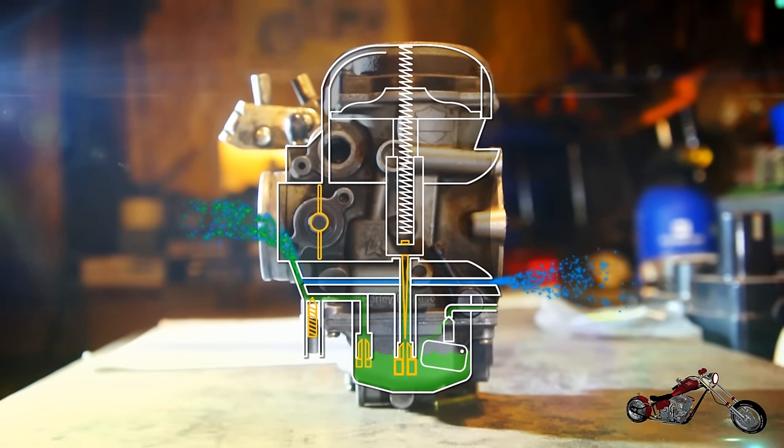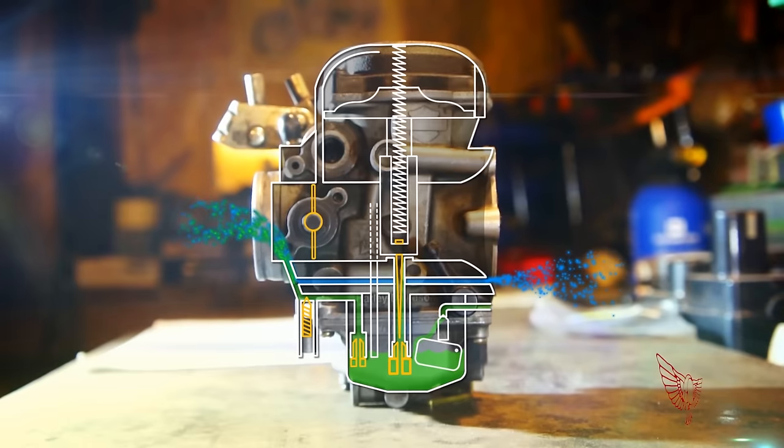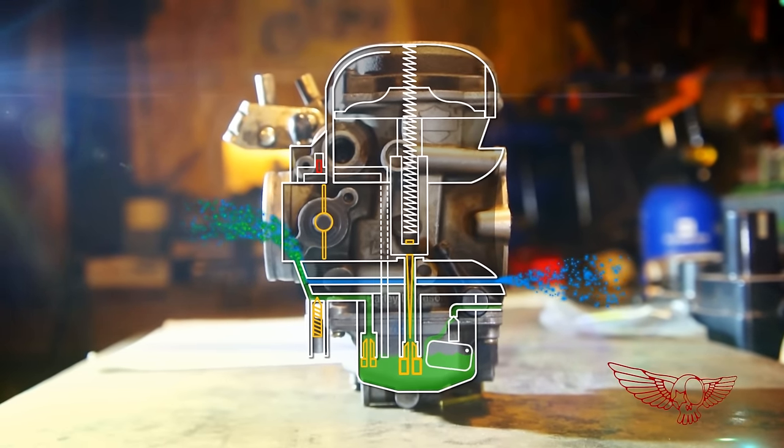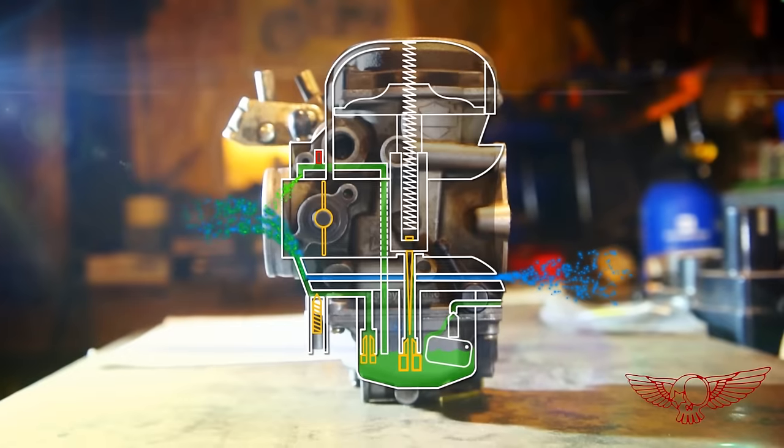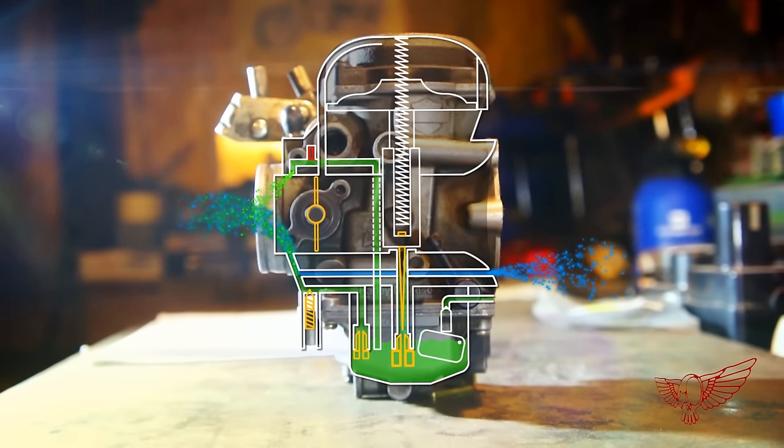Since we are at it, let's see what happens when we pull the choke knob. It opens an additional stream of fuel straight into the cylinder, enriching the mix for an easy start with a cold engine.